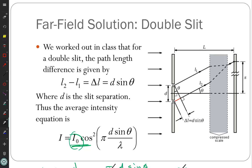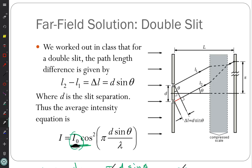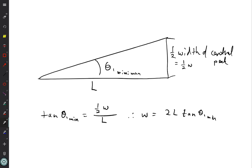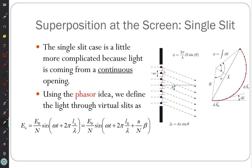That is our double-slit derivation. One thing it did not account for is variation in intensity as we move out — the equation predicts constant intensity for every peak, but that's not right. They do get fainter as you move out, so there's something missing. We need to do the single slit before we can put back in what's missing. The single slit problem is the harder one, and we do it using the phasor idea. In electric circuits we introduced phasors for inductors and capacitors — it's the same idea here, but now we're talking about the phase of light.